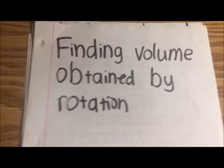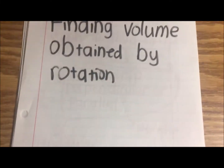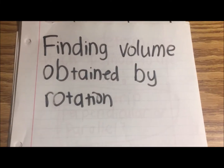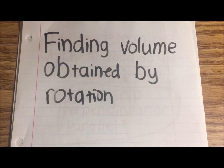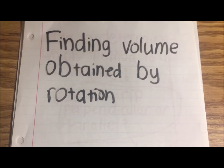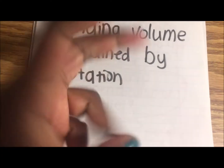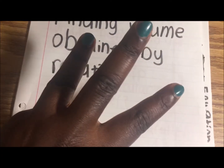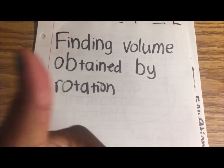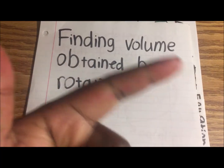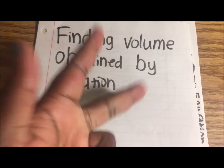In this tutorial, we're going to find the volume obtained by rotation. There are three methods to do this: disc, washer, and shell.